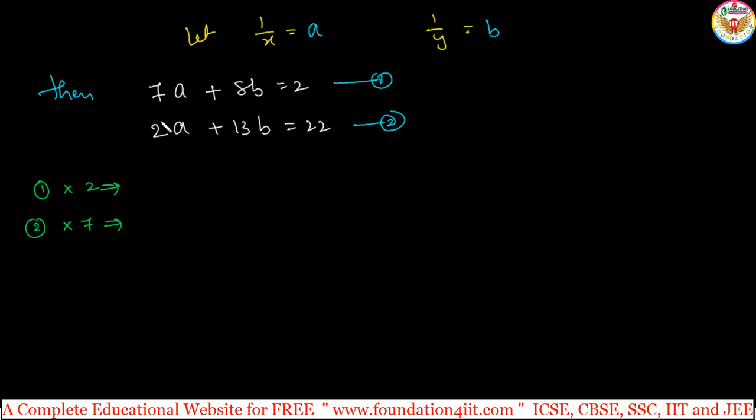Then entire equation 1 you multiply with 2 because same coefficient will get. That is 7 into a into 2, that is 14a plus 8 times 2 is 16b, 2 times 2 is 4. Second equation multiply with 7: again 14a plus 13 times 7 is 91b, 22 into 7 is 154. Same variable same coefficients now.